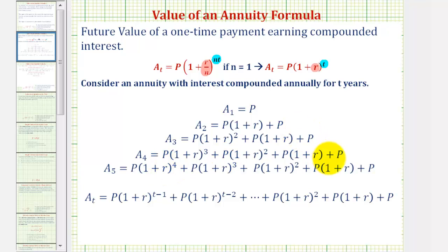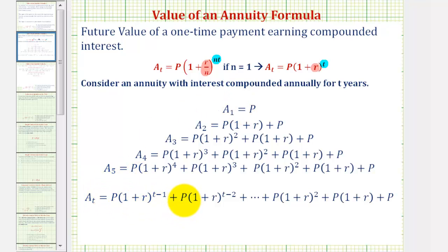You can see the pattern here. Therefore, a_t, the value of the annuity after t years, equals p times the quantity one plus r raised to the power of t minus one — representing the initial deposit from the first year plus all the interest — plus p times the quantity one plus r raised to t minus two, representing the second-year deposit plus all the interest, all the way down to plus p, the deposit at the end of year t.